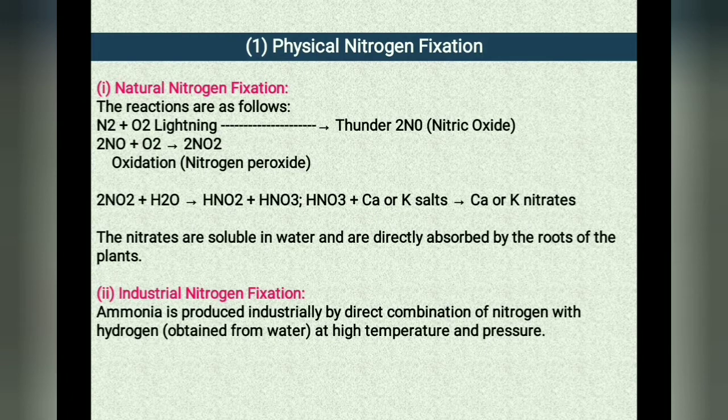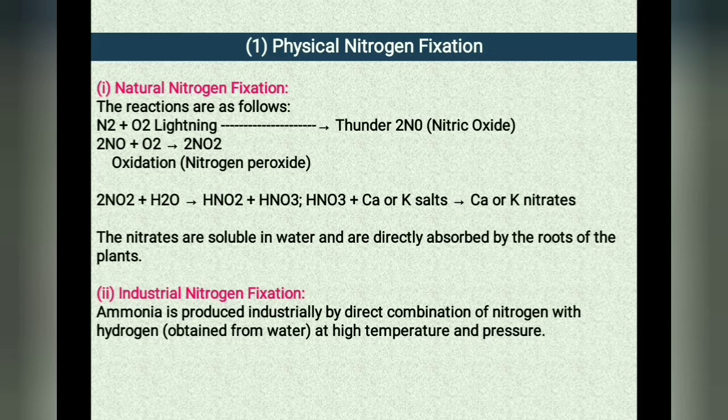Next is the industrial nitrogen fixation. Ammonia is produced industrially by direct combination of nitrogen with hydrogen at high temperature and pressure. Later it is converted into fertilizer like urea.